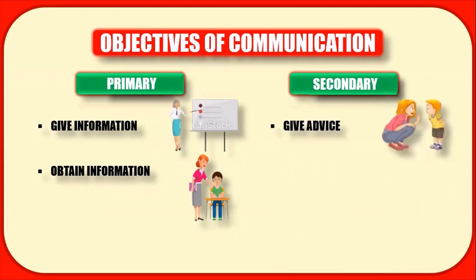The first secondary objective is to give advice. Advice is a kind of suggestion that we give to another person so that they follow a course of action. For example, I can advise my son to drink more water or to do more traveling.